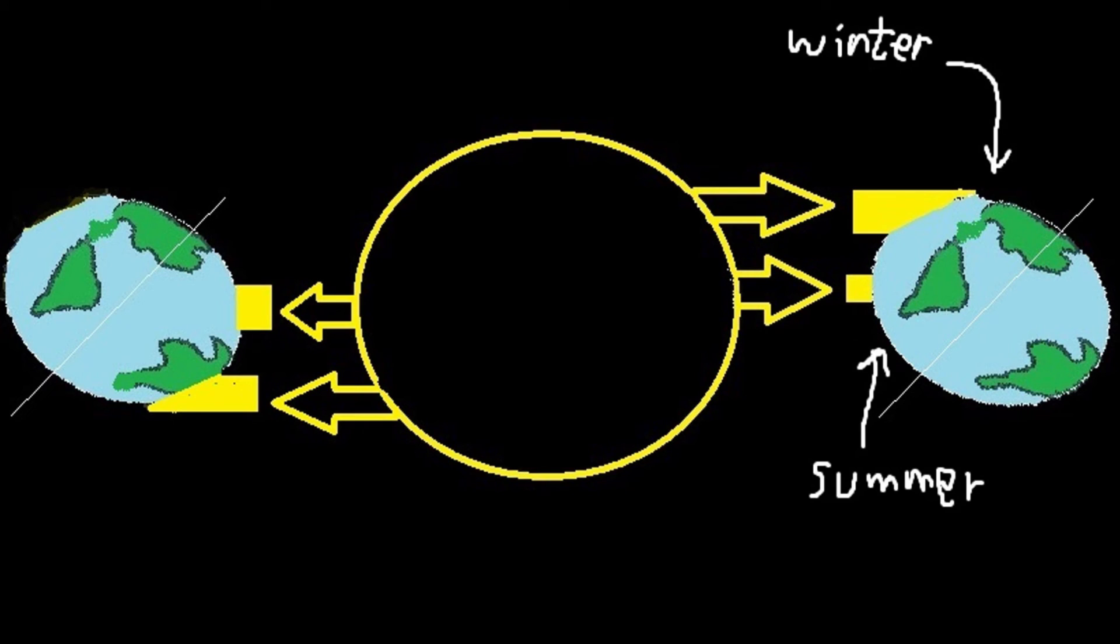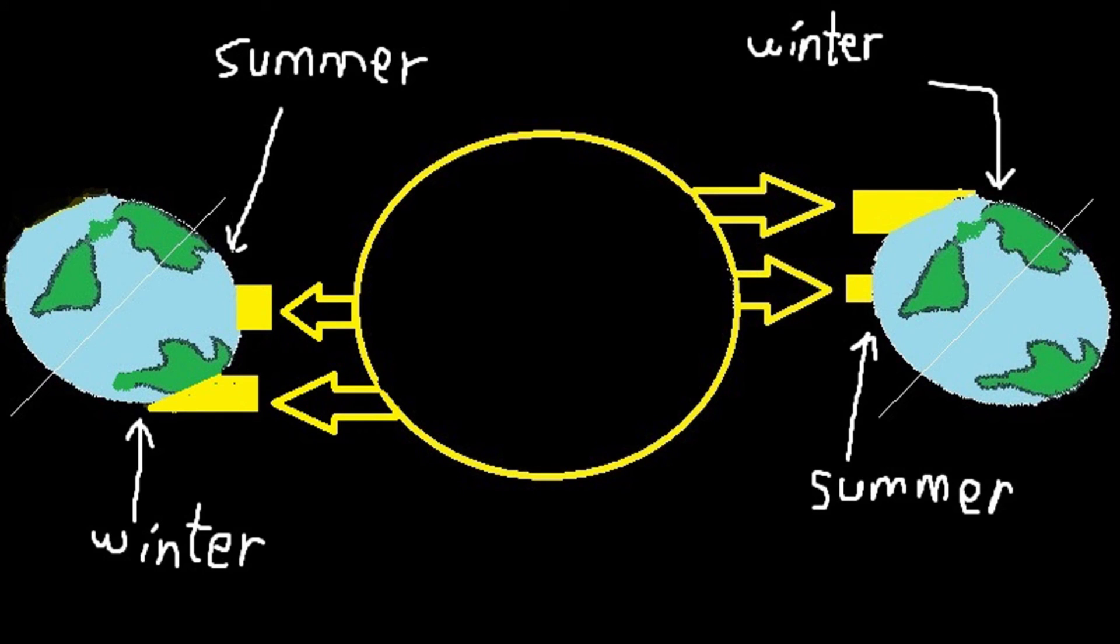Now the sunlight concentration is more towards upper regions of the Earth and lower sunlight concentration in lower part of the Earth, resulting in the top of the Earth experiencing summer and bottom experiencing winter.